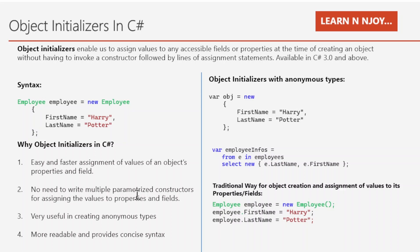There is so much code we need to write for those combinations. But with object initializers, we don't need to write these multiple parameterized constructors — we can still do it with object initializers easily and more quickly. We will see some examples later.